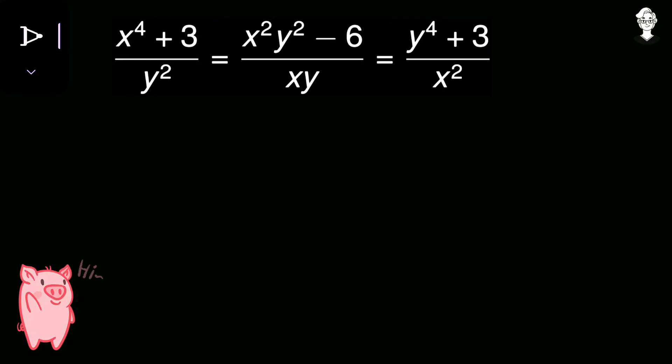Today we have an interesting algebraic question. We have to find the value of x and y in the real plane that will satisfy this equation: x to the power 4 plus 3 upon y squared equals x squared y squared minus 6 upon x y, and this equals y to the power 4 plus 3 upon x squared.